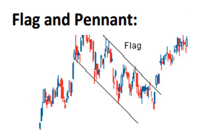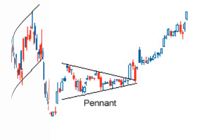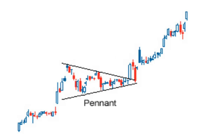Flag and pennant are two short-term chart patterns that are continuation patterns formed when there is a sharp price movement followed by a generally sideways price movement. The patterns are generally thought to last from one to three weeks, but can last from one to twelve weeks — ideally they should last between one and four weeks. They can appear both in uptrend and downtrend.